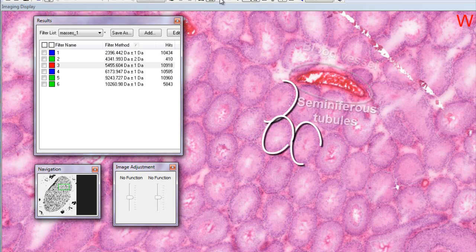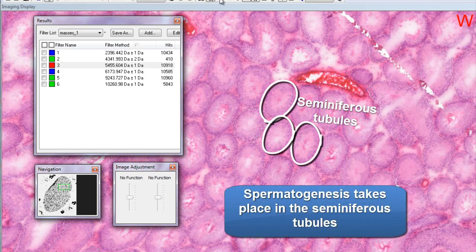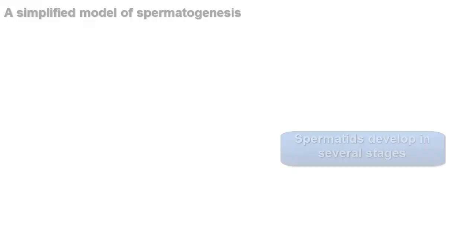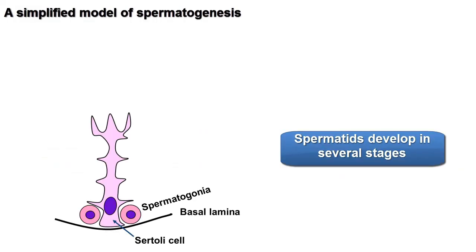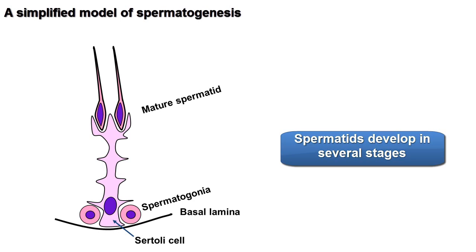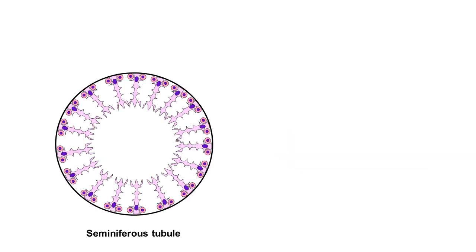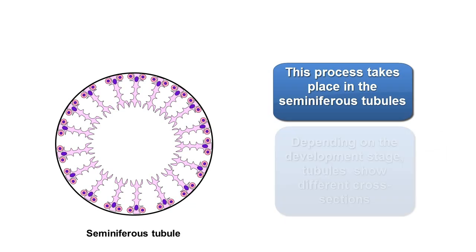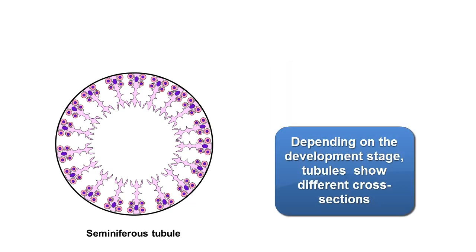Looking at the anatomical features, we can identify blood vessels and seminiferous tubules. The process of spermatogenesis takes place in the seminiferous tubules. Spermatids develop in stages, and this process takes place in the seminiferous tubules. Depending on the stage of development, different tubules will show different cross-sections.